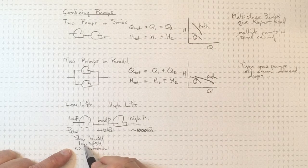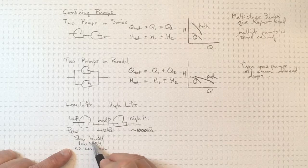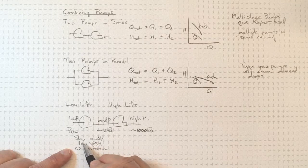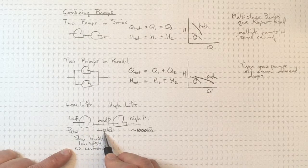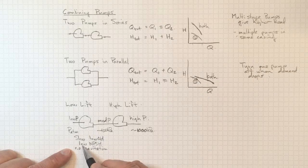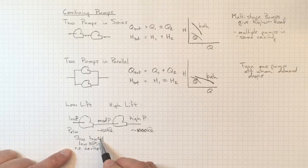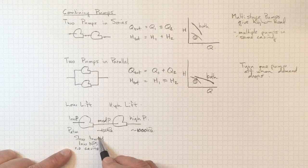But one of the consequences of having this pump running slowly is that it has a low head rise across the pump. We're only picking up about one atmosphere of pressure rise. So to get this low NPSH, we had to put up with this low head increase.